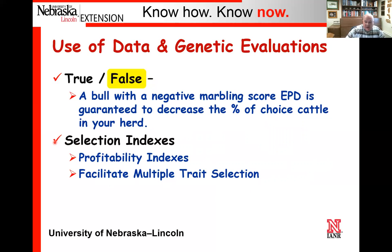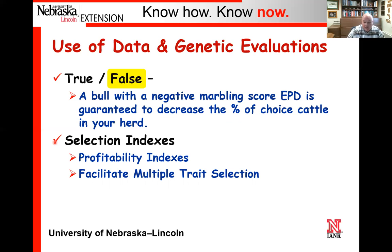We've got a number of selection indexes available to us—most are profitability indexes. They facilitate multiple trait selection and economically weight different traits for a particular category. For example, the dollar feedlot index for the Angus breed, often abbreviated dollar F, is a combination of average daily gain and feed efficiency. The dollar beef index balances feedlot performance with carcass merit and what premiums or discounts they might receive if sold on a certified Angus beef grid, facilitating multiple trait selection and estimating producer profit.